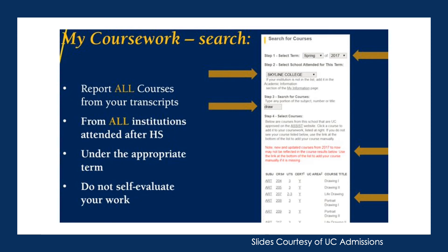Next, you will need to input your coursework. One tip is to complete the UC TAP after every term by updating the courses you have completed and the grades you have received. Remember, you have to report all courses from your transcript, even if you got a W, D, or F. Make sure you're listing them under the appropriate term and do not self-evaluate your work. If the course does not pop up, you can manually add it. Also, if you've attended a college within your district, you must still list it as a separate school — for example, if you took a West Valley class, you must go back to the schools attended and add West Valley as a college.